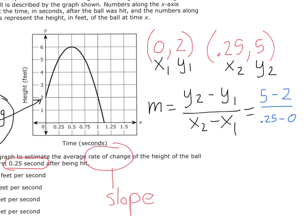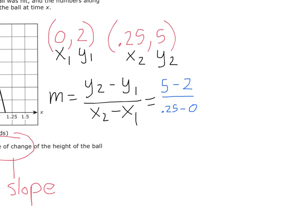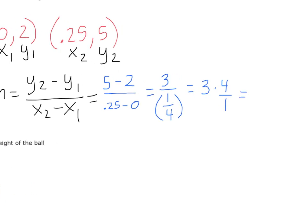Now what's 5 minus 2? 3. So I've got 3 over 0.25, which is the same thing as 1 fourth. So now if I have a fraction on bottom of a fraction, what do I do to get it on top? Flip it. So this is the same as 3 times 4 over 1. Well, 4 over 1 is just 4. So the answer is going to be 12.